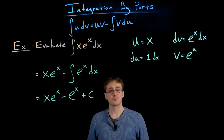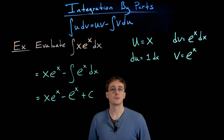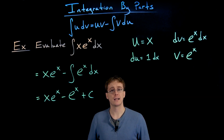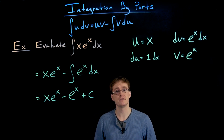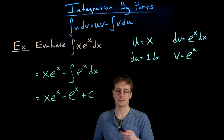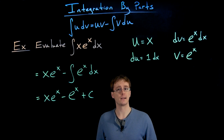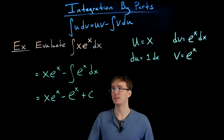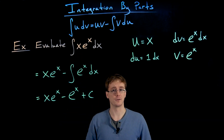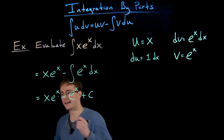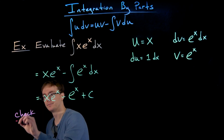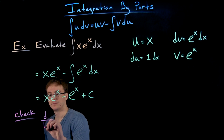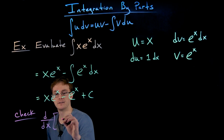We've found our antiderivative using integration by parts, but how do we know it's correct? We can always check by differentiating our answer — if it's the correct antiderivative, we should end up where we started. Let's go ahead and check quickly.